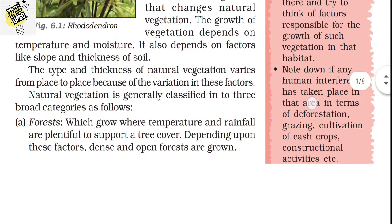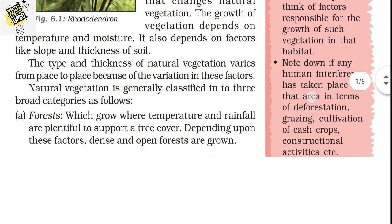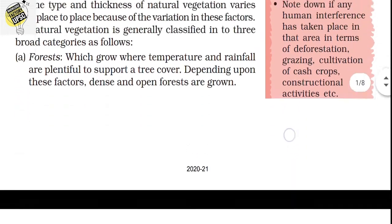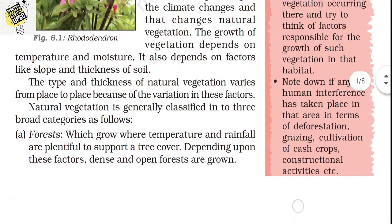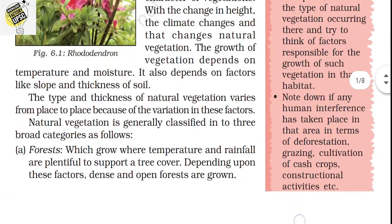The type and thickness of natural vegetation varies from place to place. Natural vegetation is generally classified into three broad categories, which is very important to keep in mind. According to the classification, natural vegetation is of three types: forests, grasslands, and shrubs.